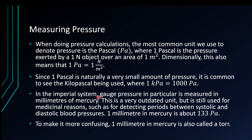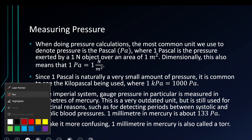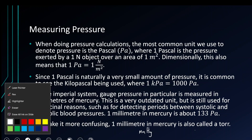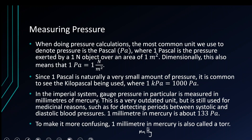Now the imperial system, because it likes to be different, measures gauge pressure in a thing known as Torr, also called millimetres of mercury. For those who don't do chemistry, millimetres of mercury is written as mmHg, where Hg is the symbol for mercury. One millimetre of mercury is called a Torr — it's the pressure exerted by a column of mercury at a depth of one millimetre.